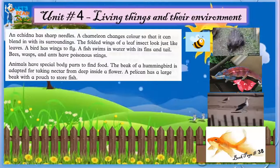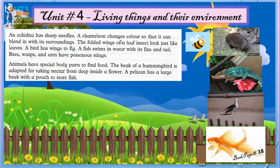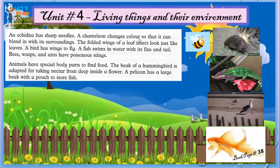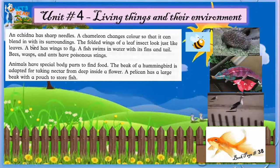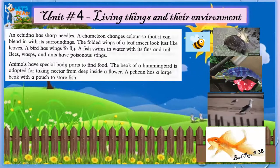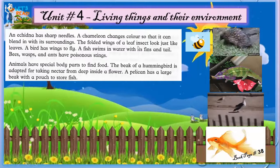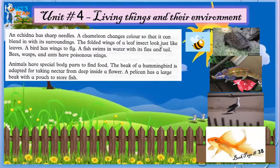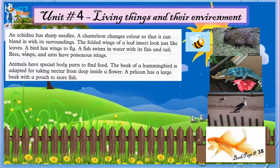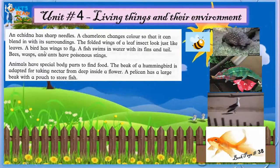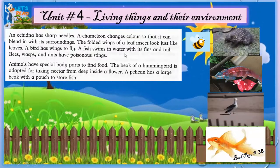A chameleon changes its color so that it can blend in with its surroundings. The folded wings of a leaf insect look just like leaves. A bird has wings to fly. A fish swims in water with its fins and tail.